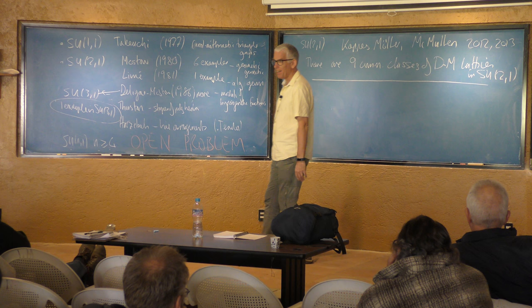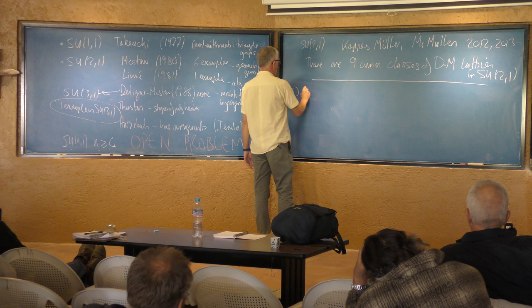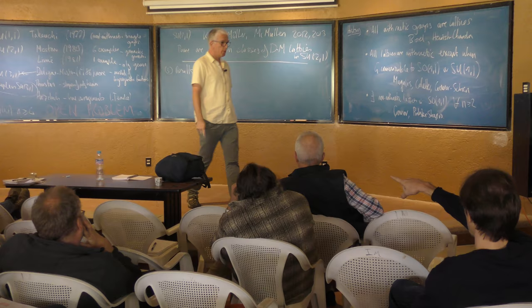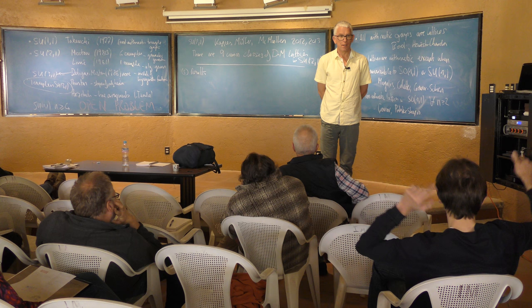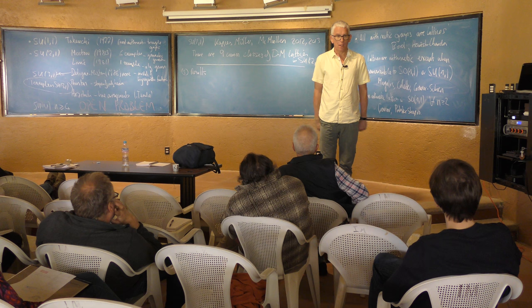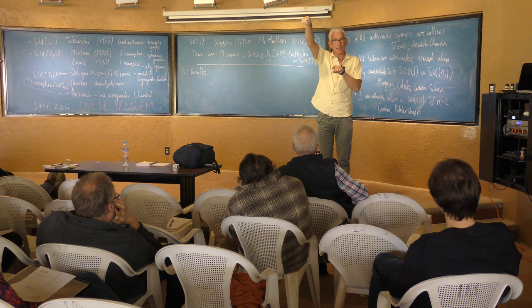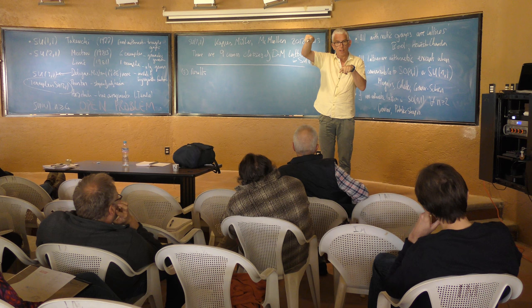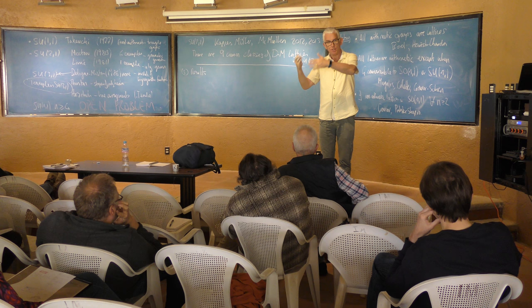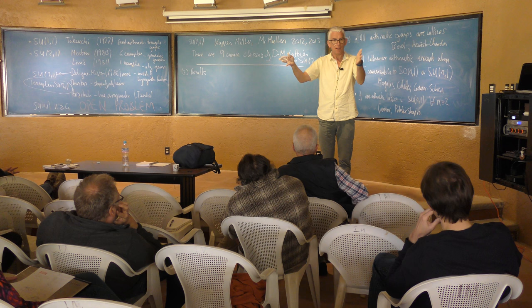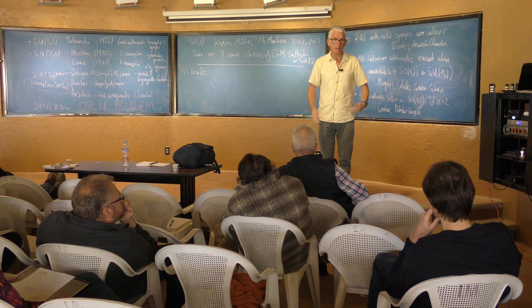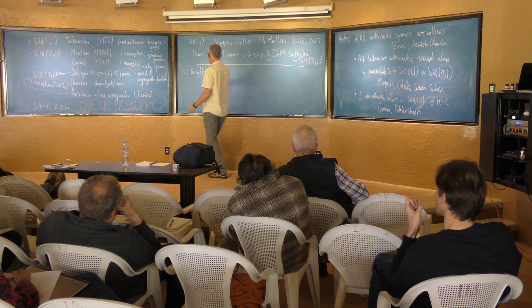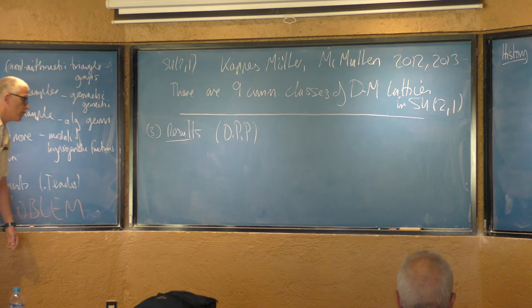So then we come to the third part: results. So this is work with Martin Dereau and Julien Popper, 2016, following on from some earlier work. There are at least 22 commensurability classes of non-arithmetic lattices in SU(2,1). History stopped in 1986, people were looking for more examples, and we found the first examples since that time. We've also divided them into commensurability classes, which is a definitive result, and we've more or less exhausted our method.